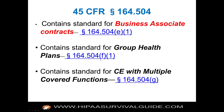An entity that offers a personal health record to one or more individuals on behalf of a covered entity is a BA. The personal health record space has largely gone away — Google Health got out of it, and Microsoft Health Vault now partners with EHR vendors as a bolt-on, which makes Microsoft a business associate of the covered entity through that relationship. A subcontractor that creates, receives, maintains, or transmits PHI on behalf of a business associate follows the same rules.